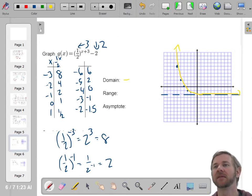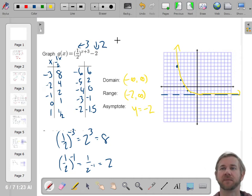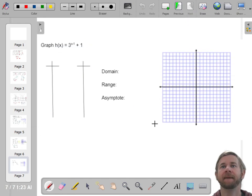The domain is all real numbers. The range is the horizontal asymptote, which is negative 2. And it goes up, so to infinity. And that's Y equals negative 2. Because it was a vertical shift of down 2. Let's do one more.